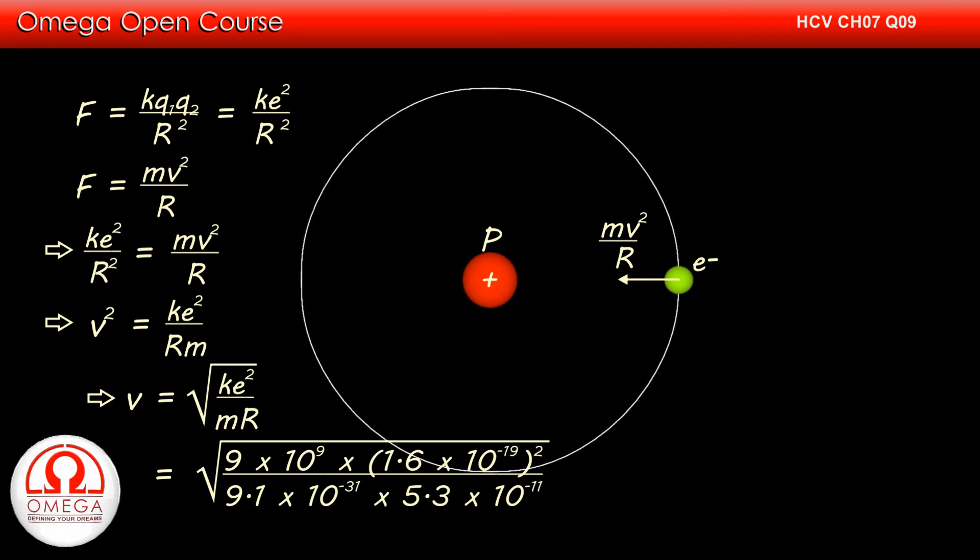Putting the values, we get √[(9 × 10⁹ × (1.6 × 10⁻¹⁹)²) / (9.1 × 10⁻³¹ × 5.3 × 10⁻¹¹)].